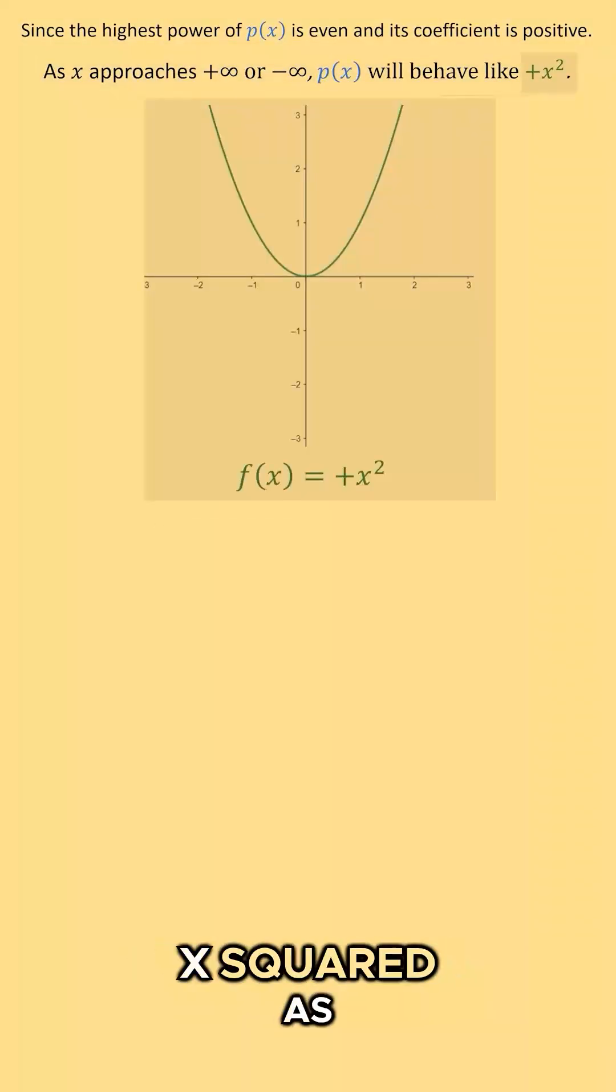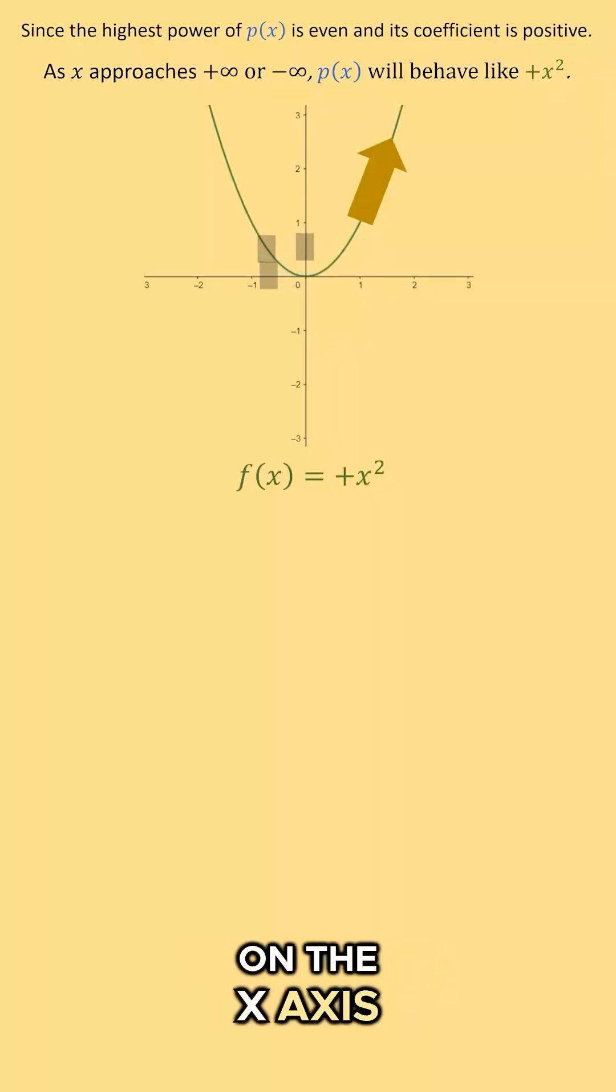When looking at x squared, as we go to infinity on my x-axis, my y values approach positive infinity. When I go to negative infinity on the x-axis, my y value goes to positive infinity.